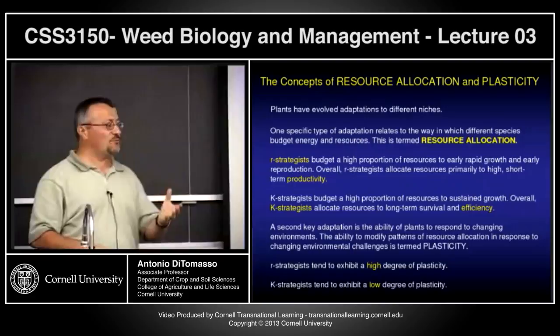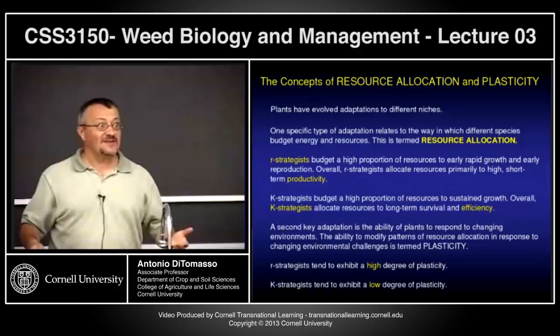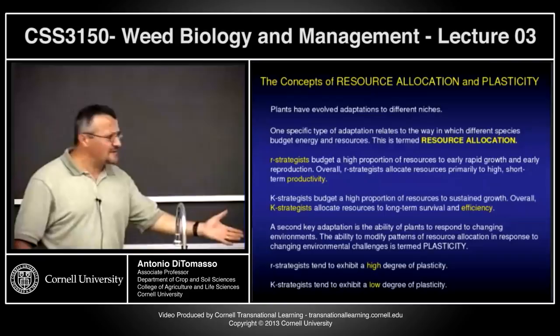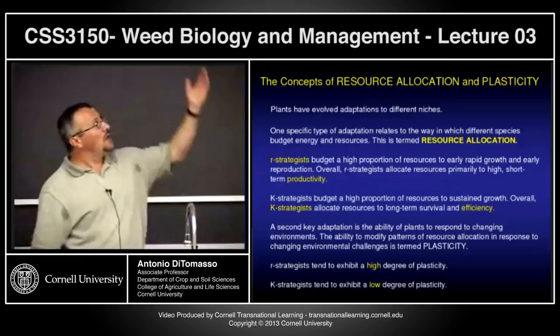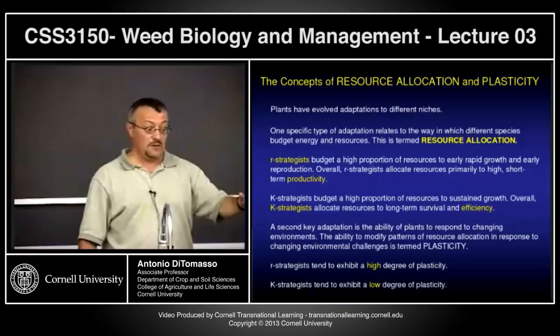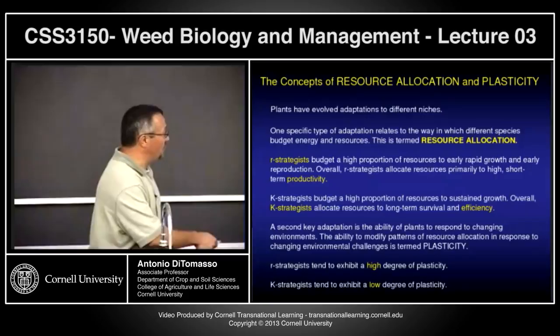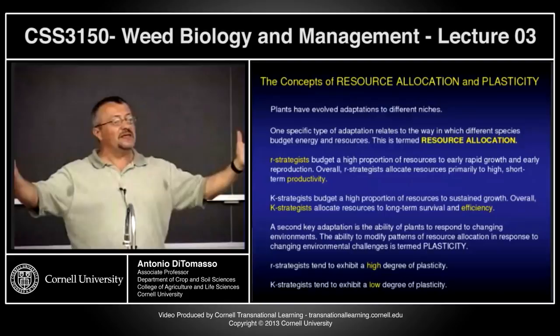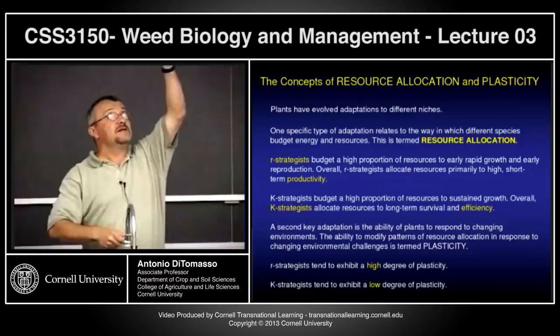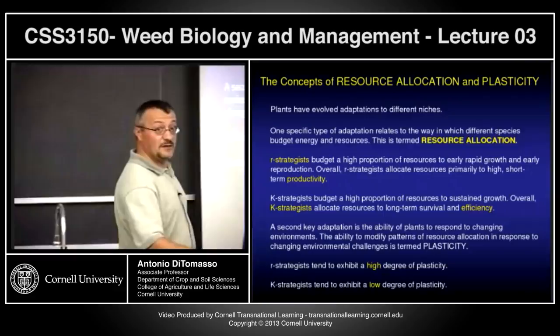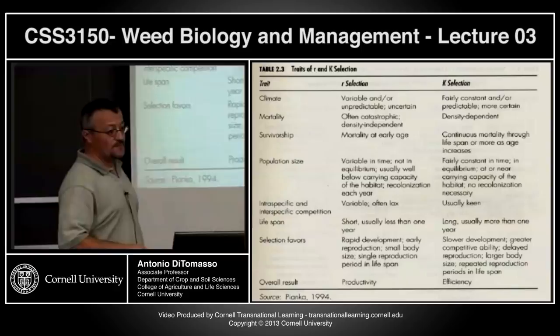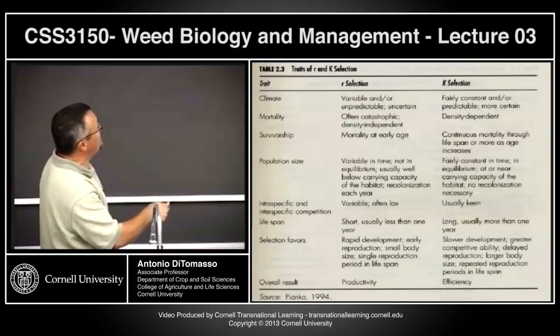Plasticity is determined by genetics, but it's really a response to the environment. Annual weeds are a classic example — I've worked with these plants and sometimes you can't believe it's the same plant. Lamb's quarters on a roadside might be this size, but in a field it can be 10 feet high. K-selected species like oak trees don't show that degree of variation. Resource allocation and plasticity — keep those in mind when talking about weeds.